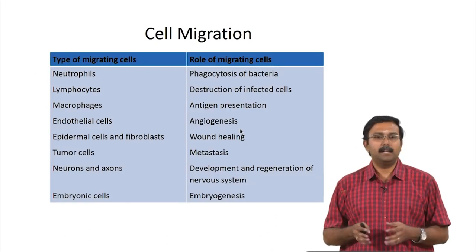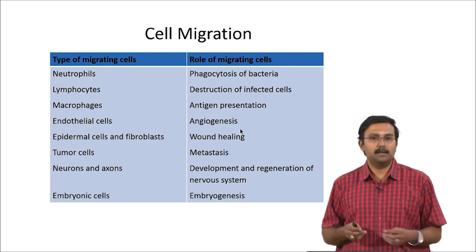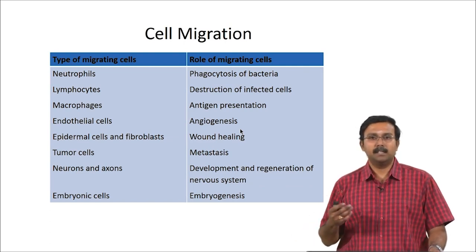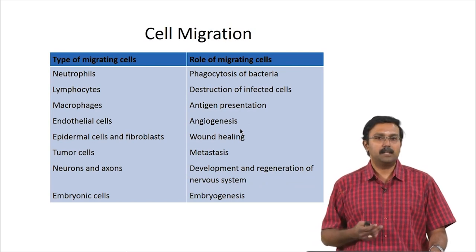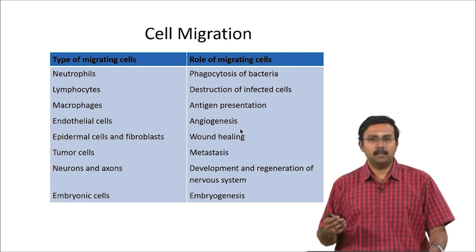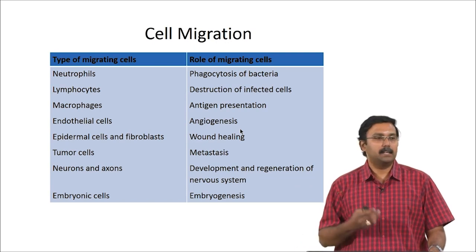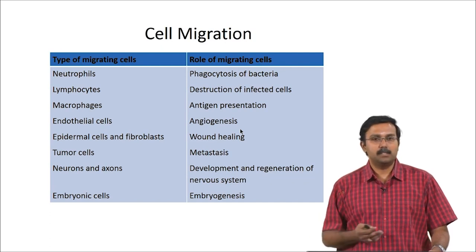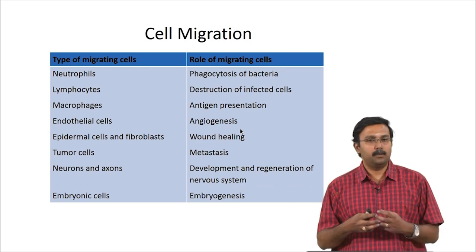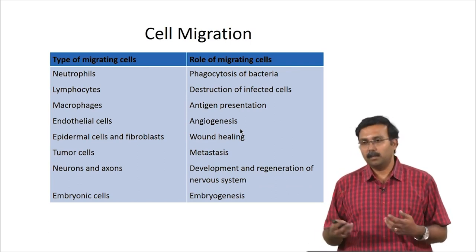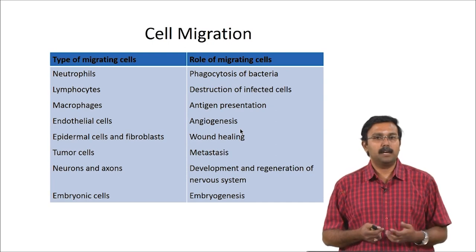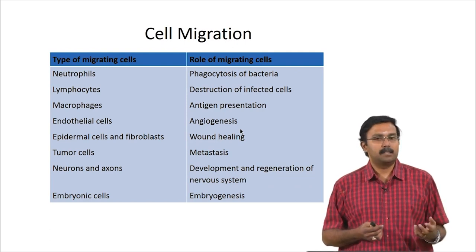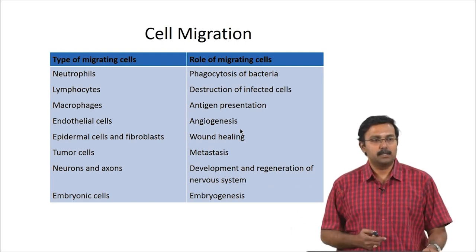Some of the cells which migrate very commonly and their roles: neutrophils migrate for phagocytosis; lymphocytes for destruction of infected cells; macrophages for antigen presentation; endothelial cells to create angiogenesis; epidermal cells and fibroblasts during wound healing; tumor cells during metastasis; neurons and axons during development and regeneration of nervous tissues; and embryonic cells migrate during embryogenesis.